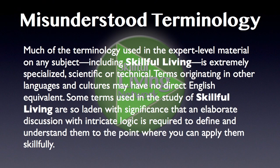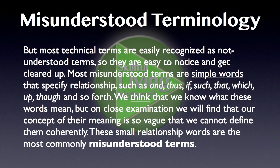Much of the terminology used in expert-level material on any subject, including skillful living, is extremely specialized. Scientific or technical terms originating in other languages and cultures may have no direct English equivalent. Some terms used in the study of skillful living are so laden with significance that an elaborate discussion with intricate logic is required to define and understand them to the point where you can apply them skillfully. Most misunderstood terms are simple words that specify relationship — such as 'and,' 'thus,' 'if,' 'such,' 'that,' 'which,' 'up,' 'though,' and so forth. We think we know what these words mean, but on close examination our concept of their meaning is so vague that we cannot define them coherently. These small relationship words are the most commonly misunderstood terms.